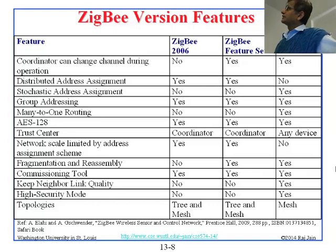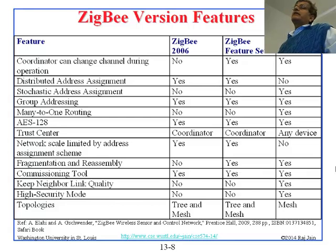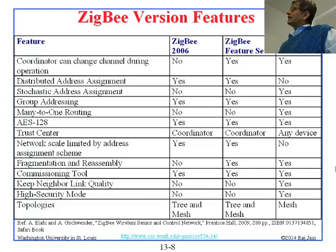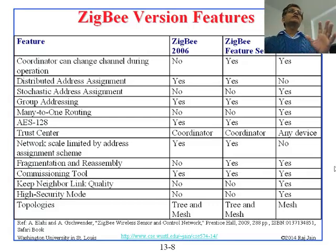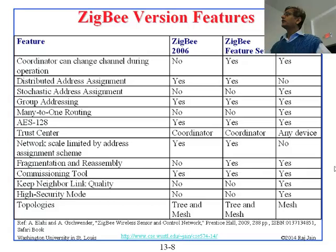The coordinator can change the channel during operation — that is the frequency agility feature, possible in the newer versions. You don't need to remember all the yes/no details, but you should know what features like frequency agility and distributed address assignment mean. There are two ways to assign addresses: divide the range, which old versions did, or use random assignment, which the new version does. They switched from distributed to random (stochastic) assignment because if a router goes down, its whole address range is lost. With stochastic assignment, routers can go away but nodes keep their addresses and communication continues.